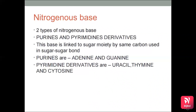The final component of the nucleotide structure is the nitrogenous base. There are two types: purines and pyrimidines. The base is linked to the sugar moiety by the same carbon used in the sugar-sugar bond. Purines are adenine and guanine; pyrimidines are uracil, thymine and cytosine.